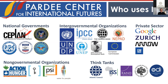Who uses IFs? Interestingly, a lot of different groups — not only us at the Pardee Center at the Korbel School, but also national governments, international organizations, and a variety of other groups. The National Intelligence Council, USAID, and the Department of Defense all use it. The United States government is a strategic thinker that wants to understand how things might unfold in the years to come and what policy interventions might change what we expect in the future.